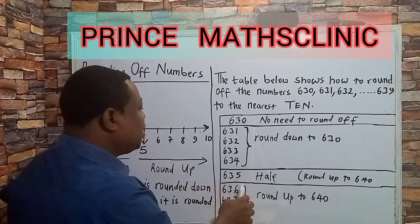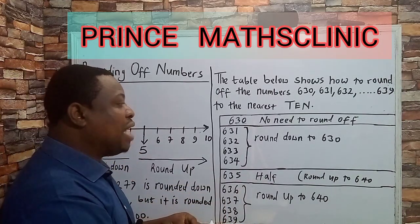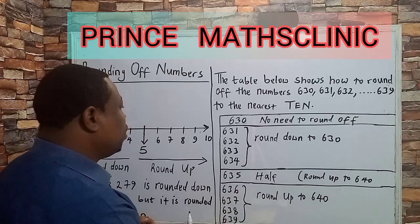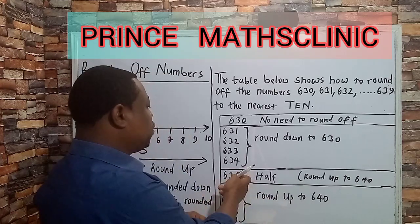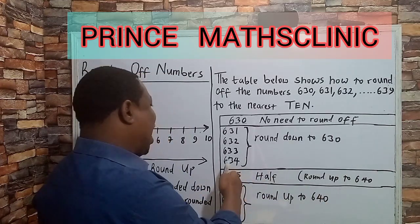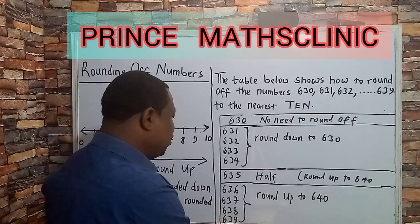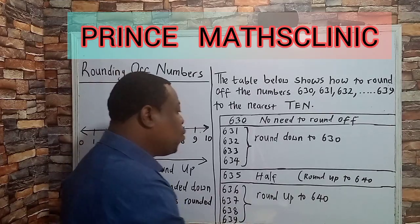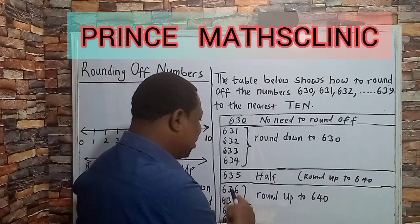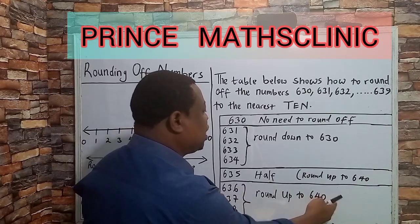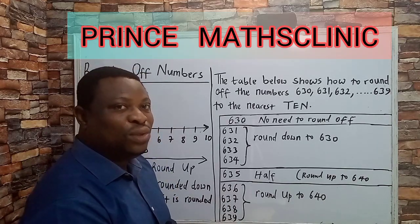635 is midway or halfway, just as we have 5 on the number line. And remember, 5 is rounded up to 1, so therefore this number will be rounded up towards 640. And all the numbers from 636 to 639 are already closer towards 640 than to 630 — so all those numbers also round to 640. This is how I recommend you round up and round down numbers.